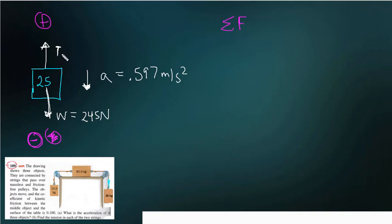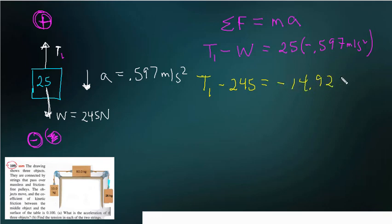And then sum of the forces, I'm going to call this T1. Sum of the forces equals M A. This is where it pays to label the plus and minus so that you're consistent. So T1 is positive minus the weight equals mass times the acceleration, but the acceleration is negative. So then we're looking for T1. T1 minus 245 equals minus 14.925 because that acceleration is so small.